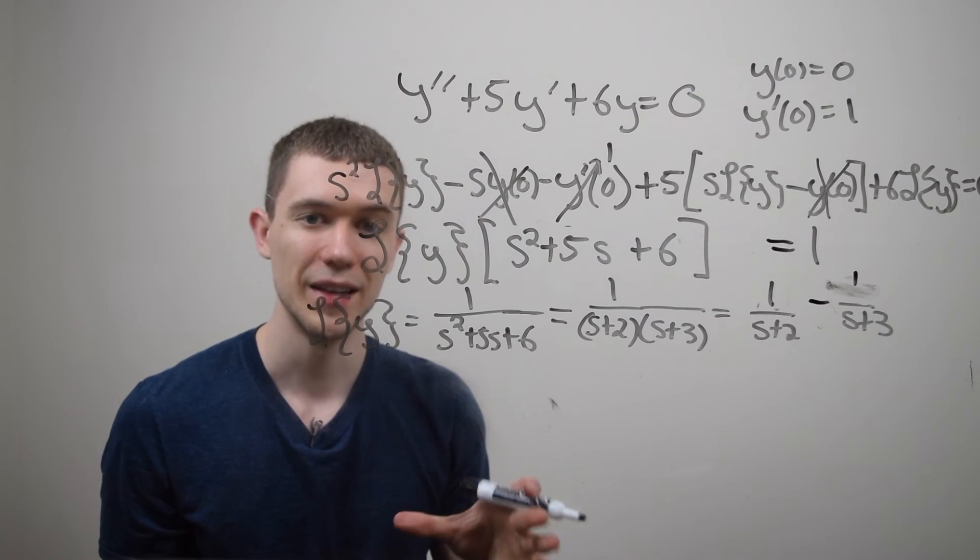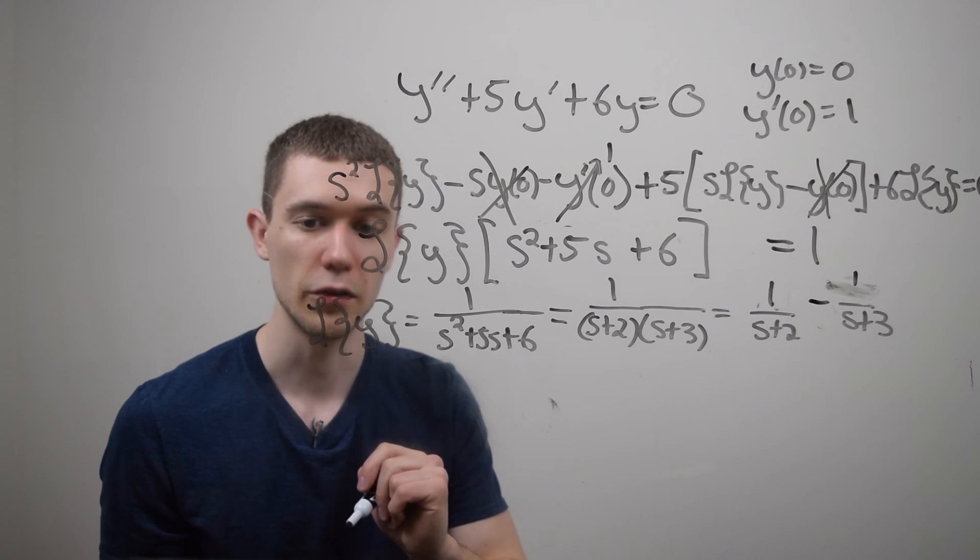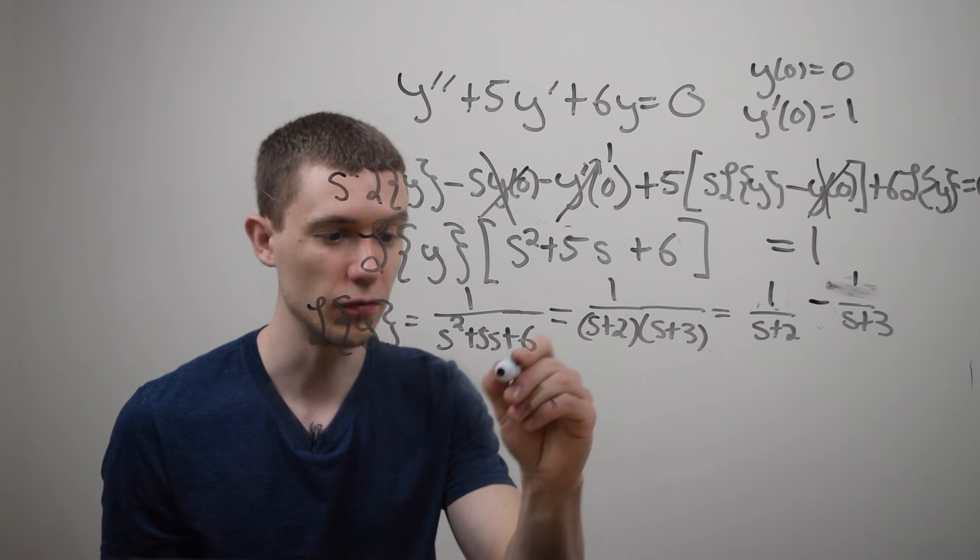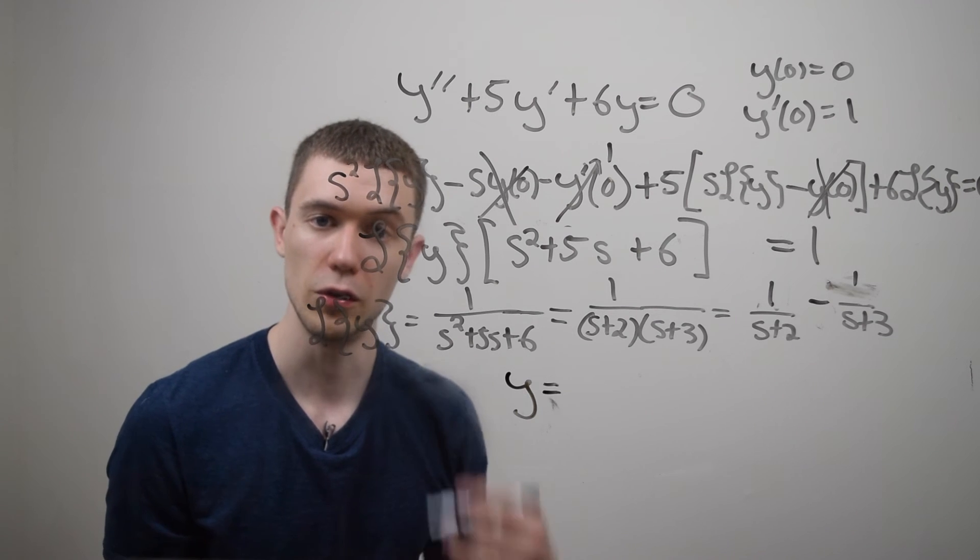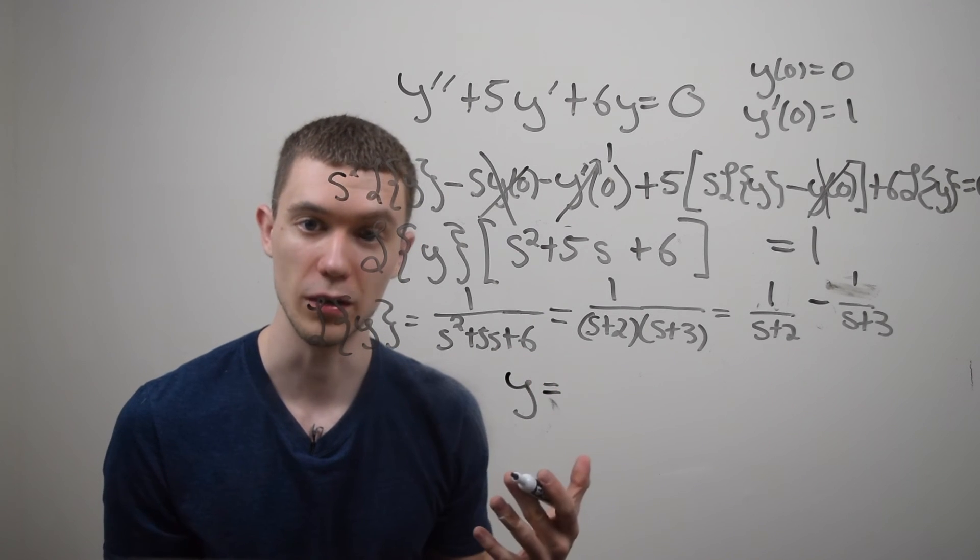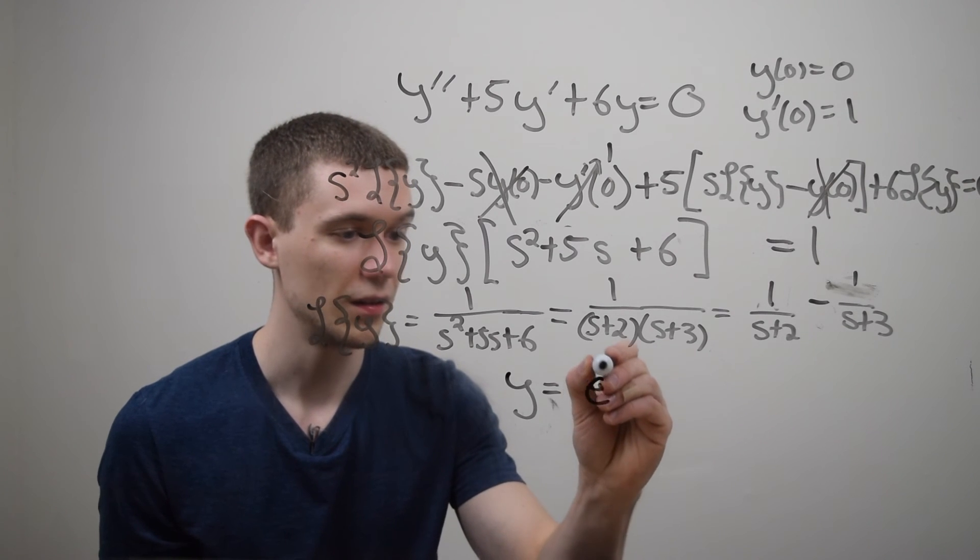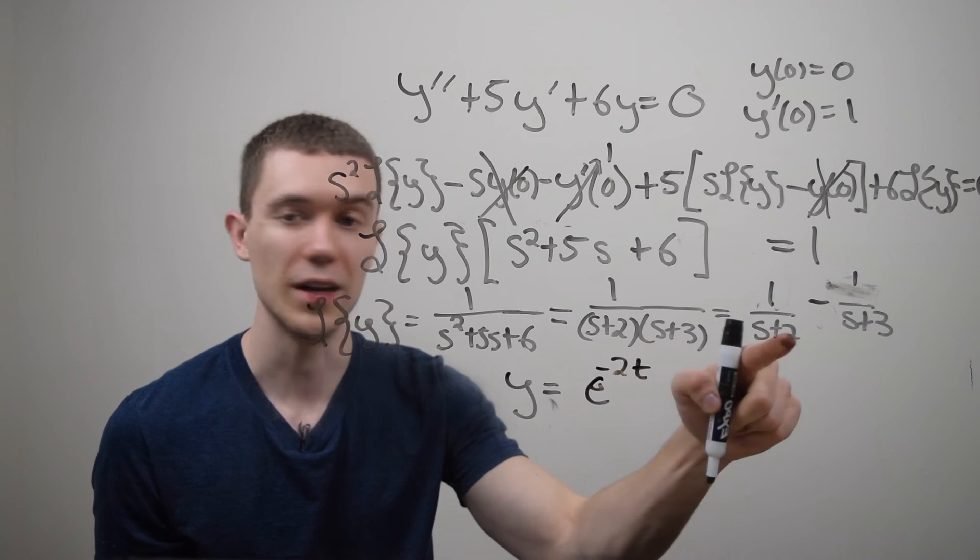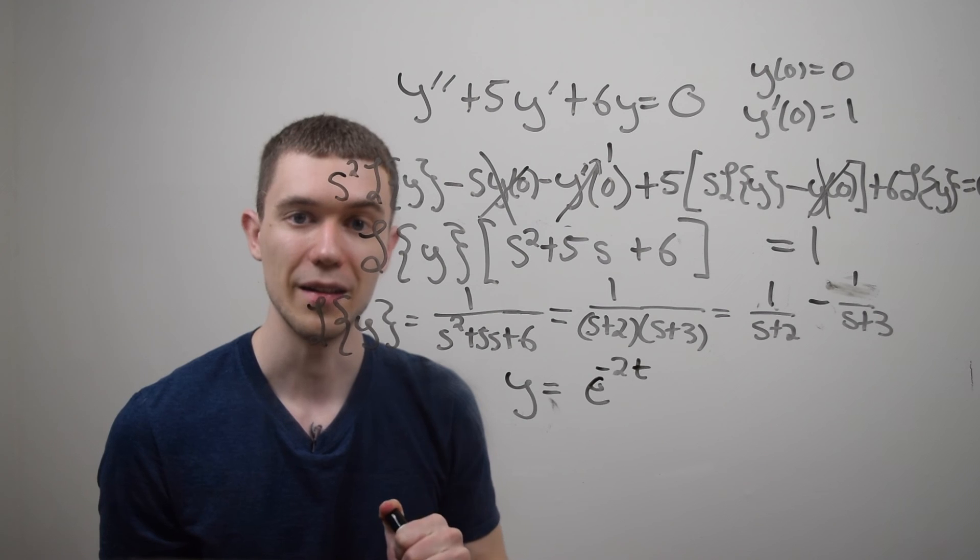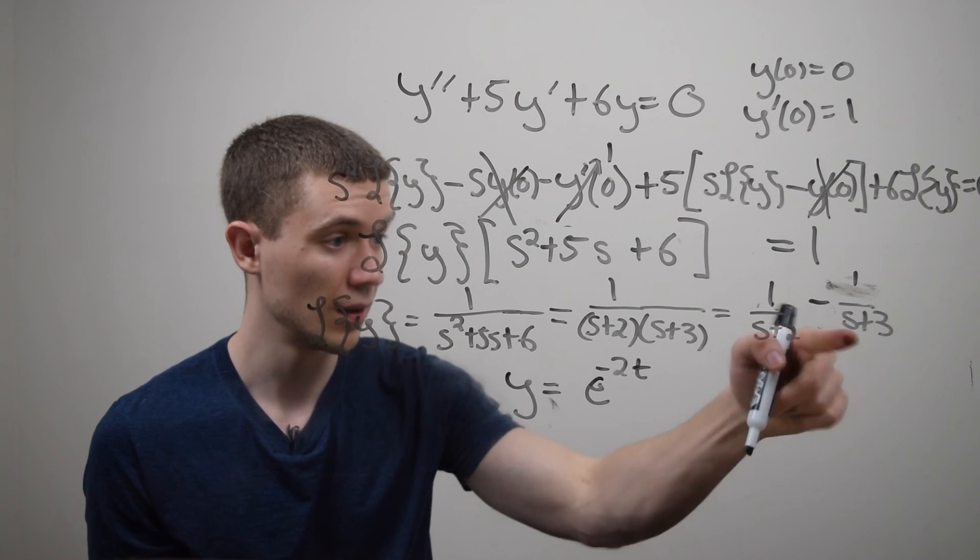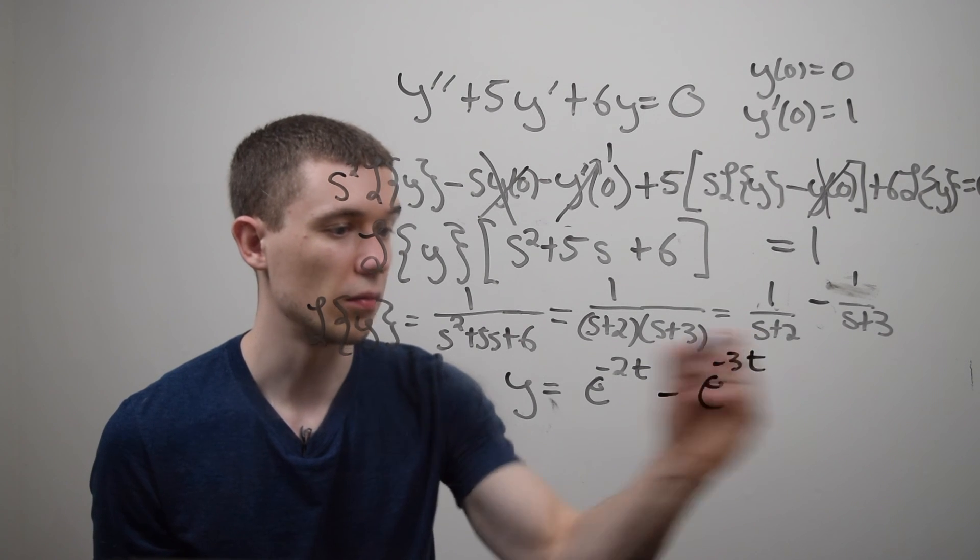And now that I've done this, this is an easy form to take the Laplace inverse of both sides. So if I inverse Laplace of y, if I inverse transform it, that'll just be y. If I inverse transform one over s plus two, you can either look on a table of Laplace transforms, or maybe you have this in your head by now. But this is just e to the minus two t. Anytime you have s plus something, that turns into an e to the negative that thing. And here, this would be minus, very similar, e to the minus three t.